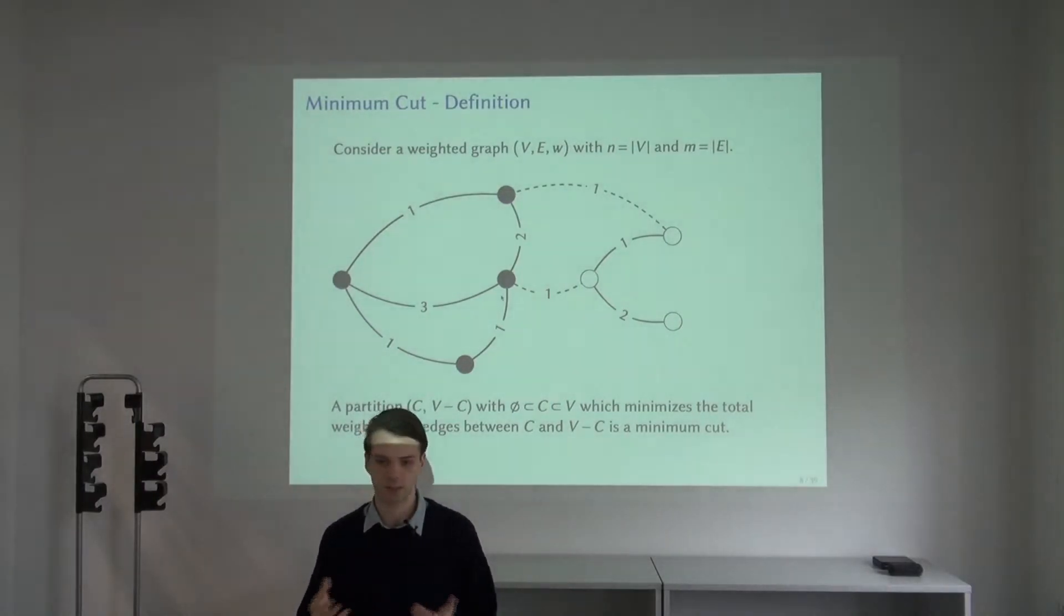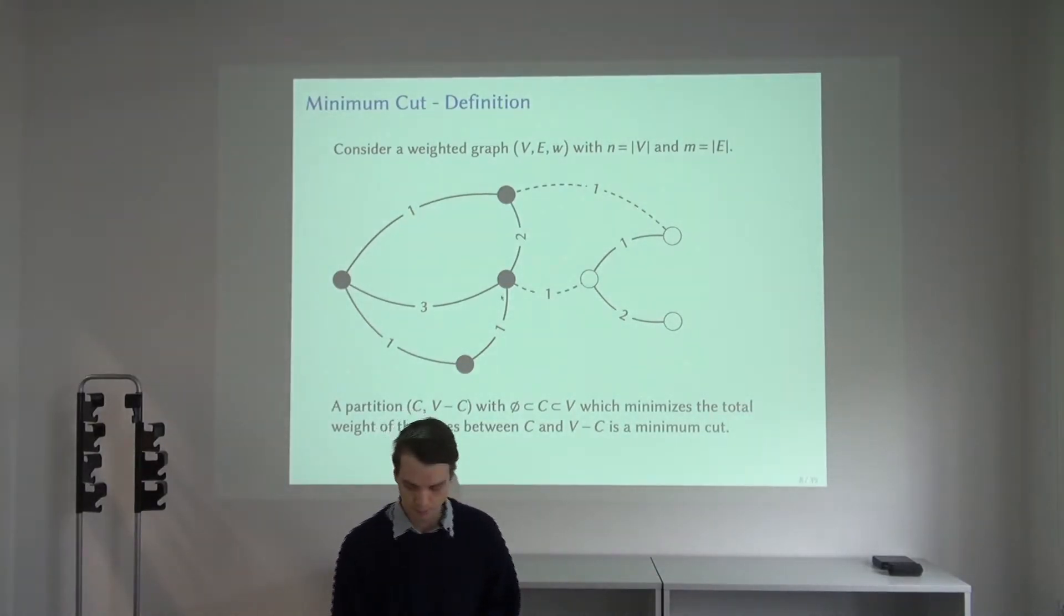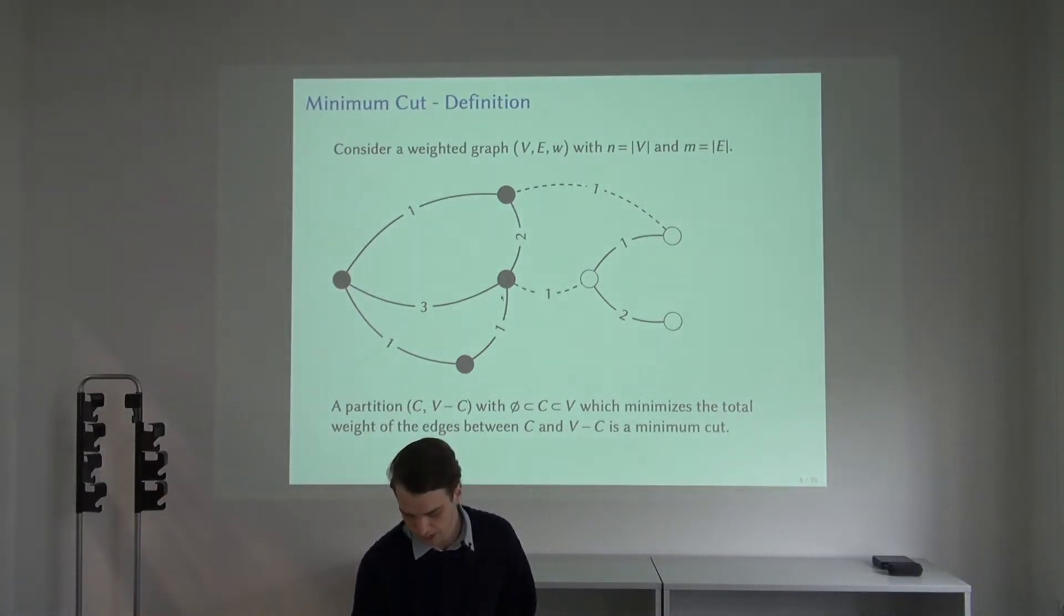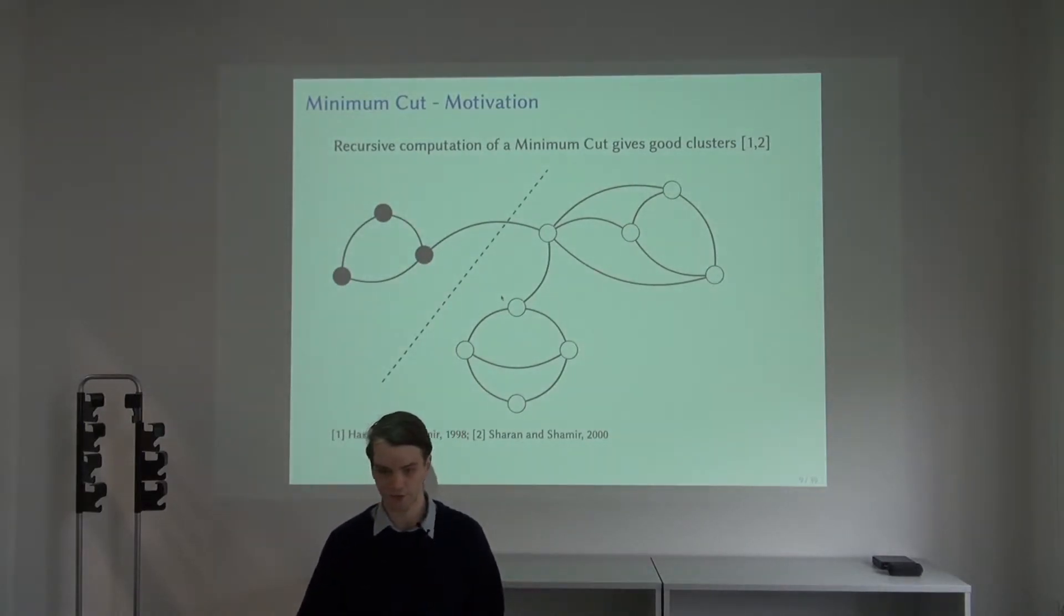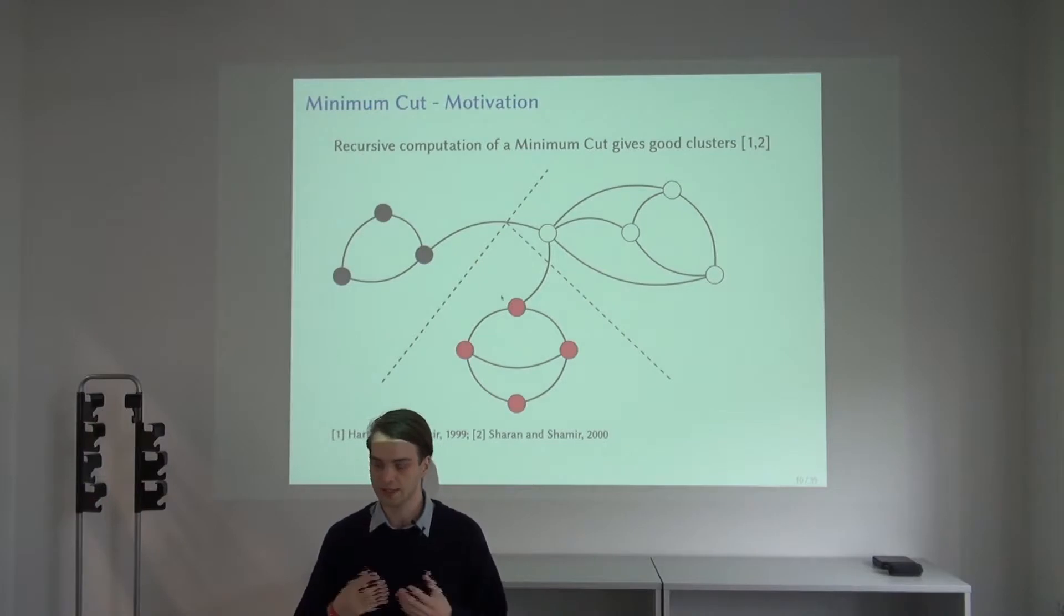In an undirected graph this corresponds to the edge connectivity of the graph, the number of edges that need to fail for the graph to become disconnected. Moreover, minimum cuts can be used to cluster the vertices of the graph. If we recursively partition the graph according to a minimum cut and stop once a good criterion is reached, then we get clusters with nice properties such as low diameter.